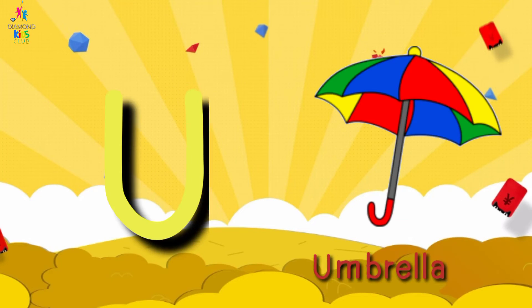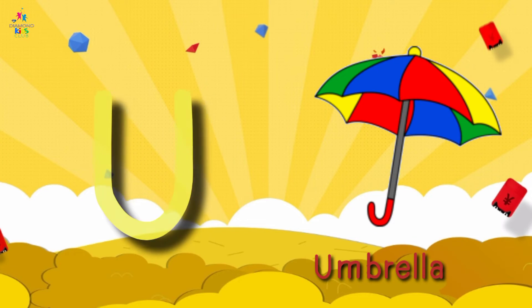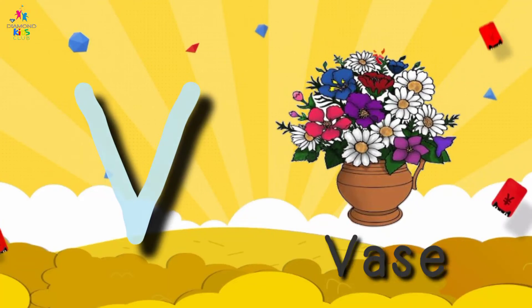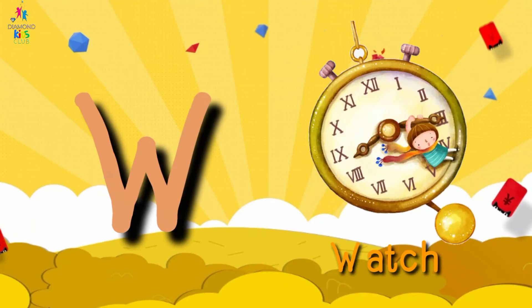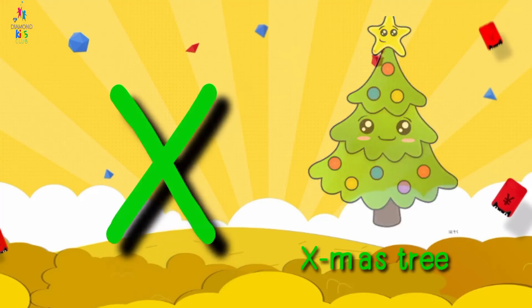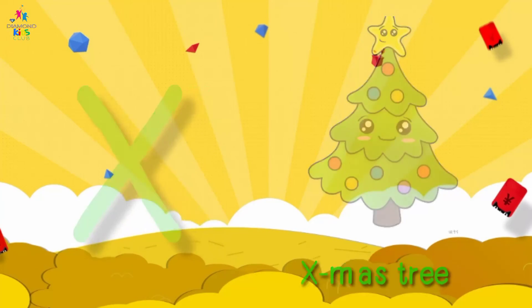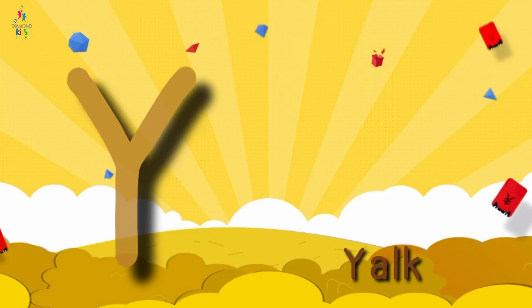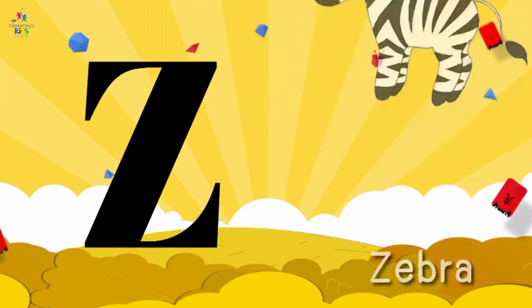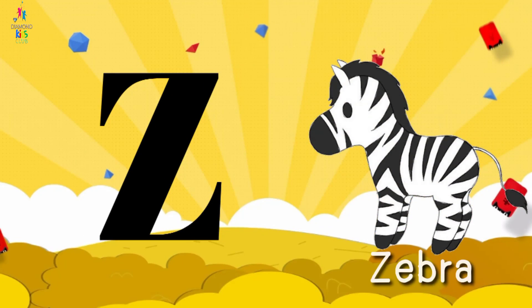T for Tree, U for Umbrella, V for Vaas, W for Watch, X for Exmostry, Y for Yard, Z for Zebra.